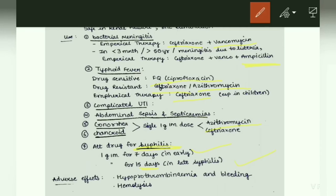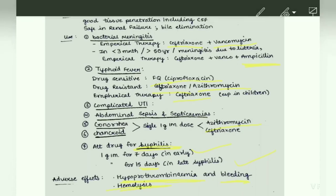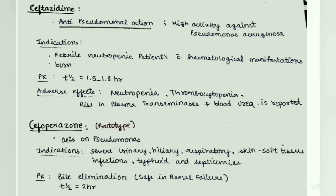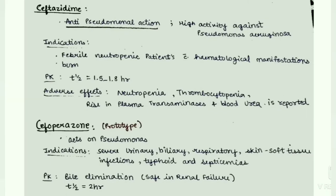Adverse effects of ceftriaxone are hypoprothrombinemia and bleeding. Hemolysis can also occur. Next drug — ceftazidime. It has anti-pseudomonal action with high activity against Pseudomonas aeruginosa, hence it is called the anti-pseudomonal drug. Indications are febrile neutropenic patients with hematological manifestations and also in burn patients.